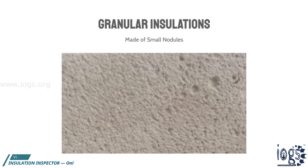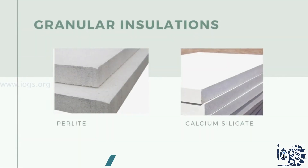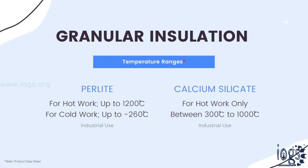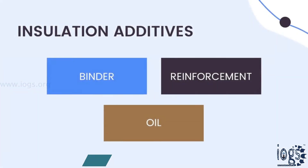Granular insulation materials are made of small nodules which create a granulated structure. Calcium silicate and perlite are the two popular granular insulation materials used in the industry. Perlite insulation is usually used for both hot and cold work.